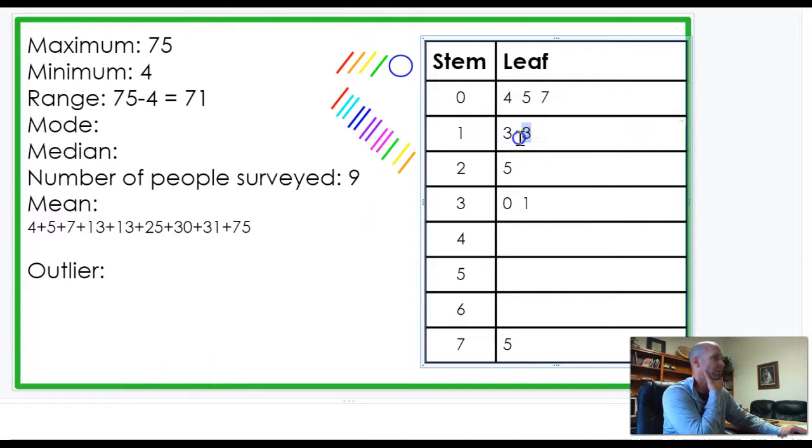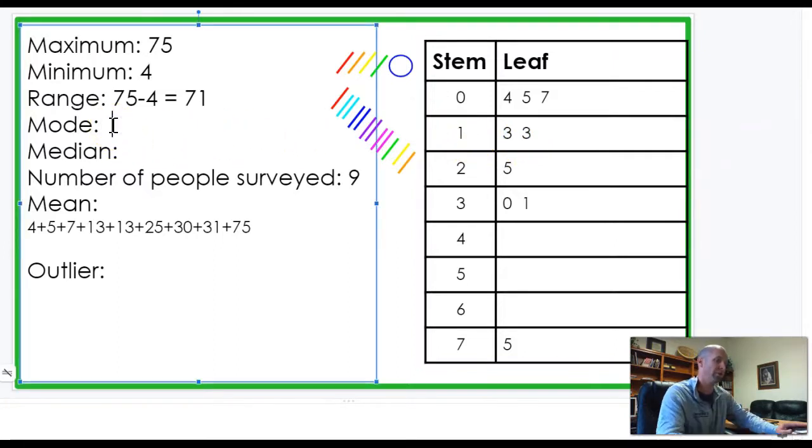So, thirteen is actually the one that appears the most. And that's right here. There's two threes. That means there's two thirteens. Because that's the ones place. That's the tens place. So, the mode, or the one that appears the most, equals thirteen.